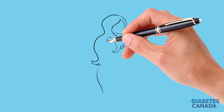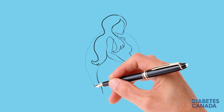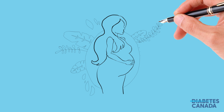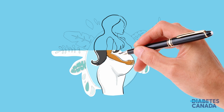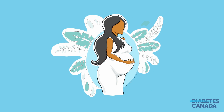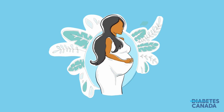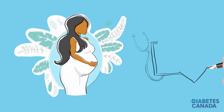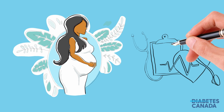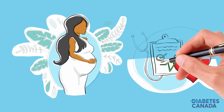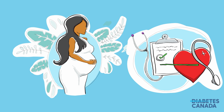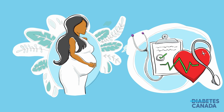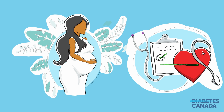Gestational diabetes is a temporary form of the condition that occurs during pregnancy in 3 to 20 percent of people. Gestational diabetes ends at the time of delivery, but the risk of developing type 2 diabetes increases after having gestational diabetes, so it's important to regularly screen for the condition in the years following. The management of gestational diabetes involves healthy behaviors, monitoring, education, support, and often medication.